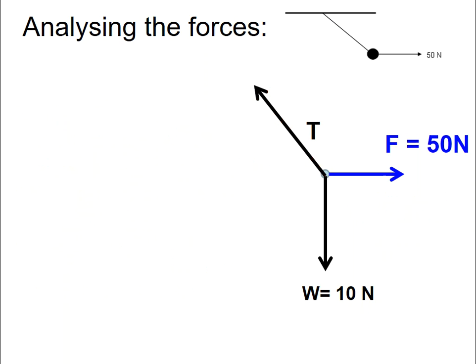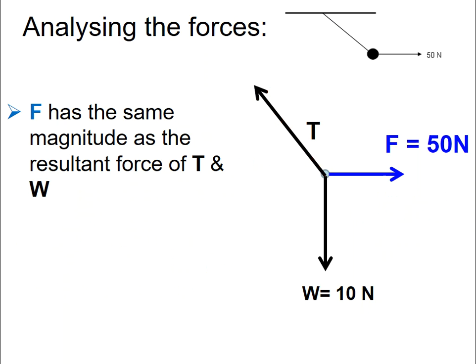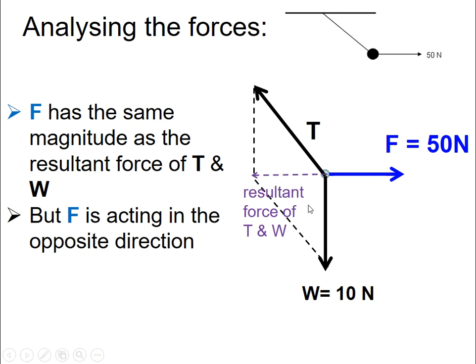Now, if you look at the horizontal force, this horizontal force actually has the same magnitude as the resultant force of T and W. But F is in the opposite direction of T and W.